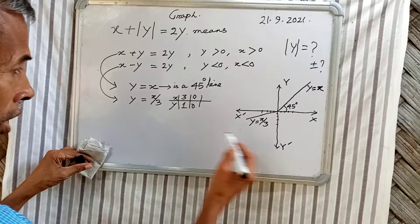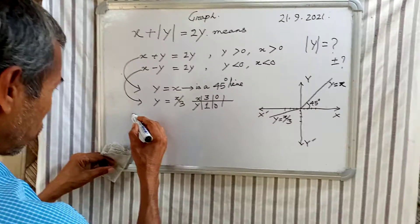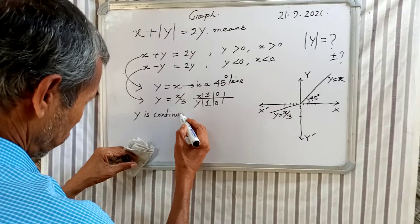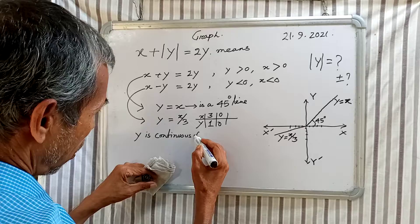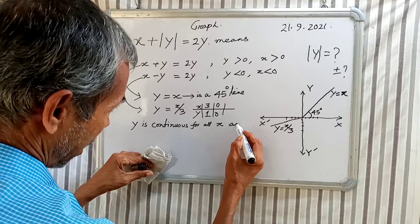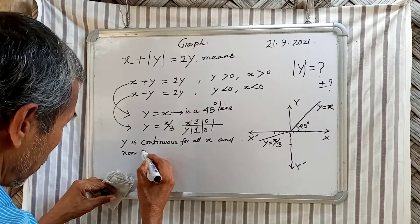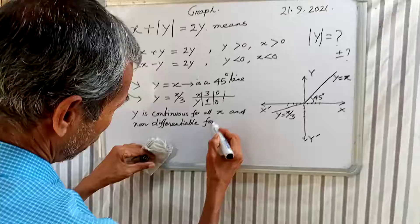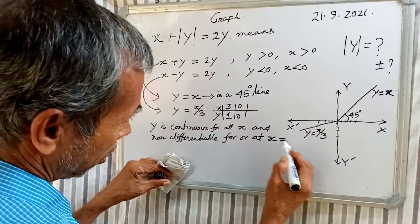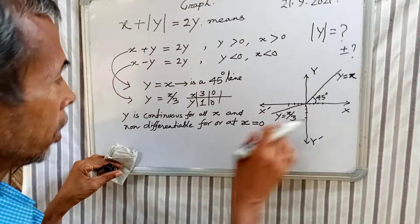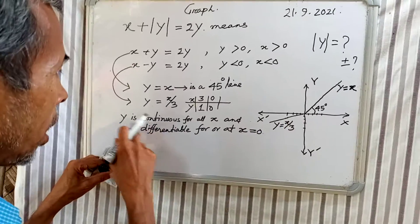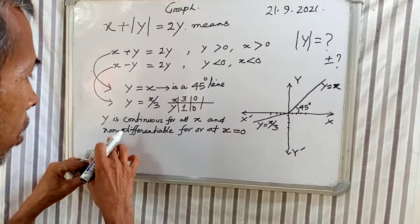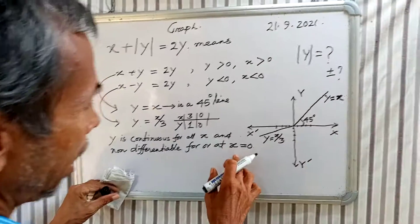Now from this diagram it is clear that y is continuous for all x, and non-differentiable at x equal to 0.